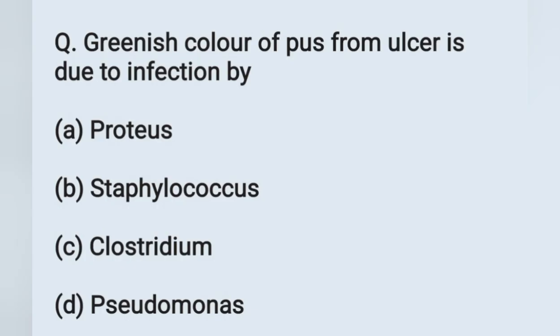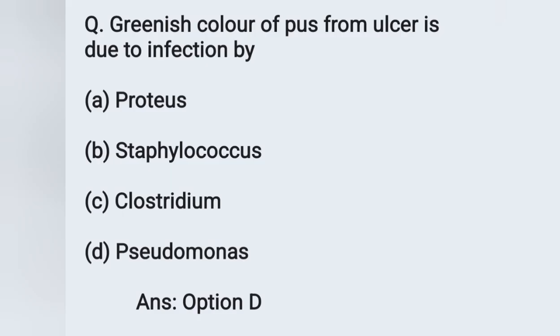The next question: Greenish color of pus from an ulcer is due to infection by — option A: Proteus, option B: Staphylococcus, option C: Clostridium, option D: Pseudomonas. Greenish color pus from an ulcer is due to infection by Pseudomonas. Option D is the correct answer.